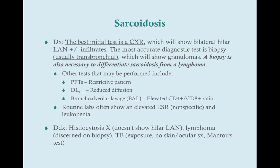Pulmonary function tests are going to show a restrictive pattern with decreased lung volumes. Sarcoidosis will also show a reduced diffusion on your DLCO, because this is a disease that affects the tissue of the lungs. Bronchoalveolar lavage is not typically done anymore, but if given on the USMLE it will show an elevated CD4 to CD8 ratio. Routine labs generally show an elevated ESR as a marker of inflammation and leukopenia, but those are not specific labs.